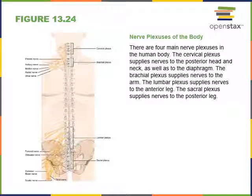The brachial plexus forms from C5 through T1 and connects to the branches traveling through the arms. The major nerves branching from the brachial plexus are the musculocutaneous, median, axillary, ulnar, and radial nerves. These excite skeletal muscles moving the arms and carry sensory information from the skin and sensory receptors throughout the arm. The lumbar plexus arises from L1 through L4 and innervates the thighs, inferior abdominal wall, and psoas muscle.